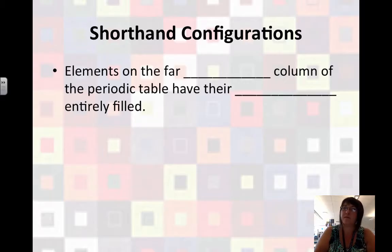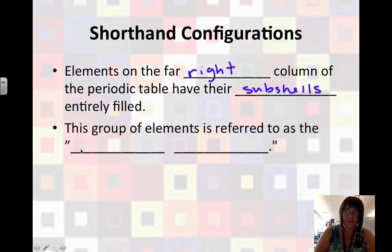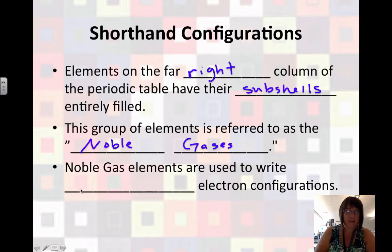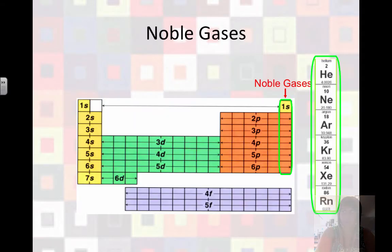Now let's talk about a shortcut. Shorthand configurations can save us a lot of time. Elements on the far right column of the periodic table have their subshells completely filled. So this is a group of elements known as the noble gases. Noble gases are non-reactive because their energy levels are full, and they don't need any more electrons. So we use the noble gas elements, since they're completely filled up, to write a shortened electron configuration. So on the periodic table, it's these guys. The helium, neon, argon, krypton column, 18.